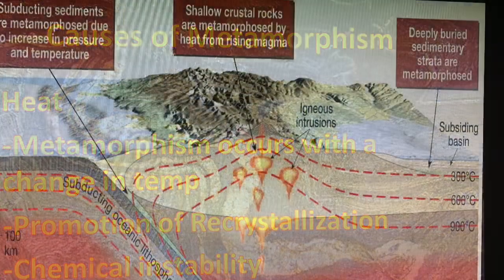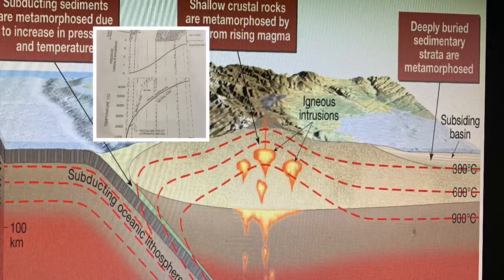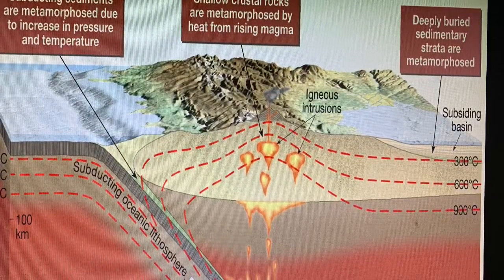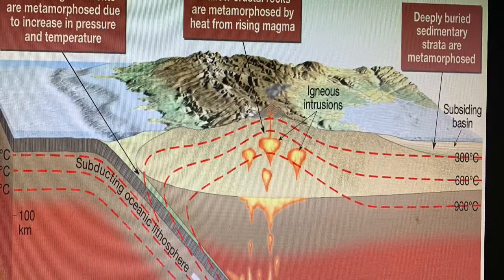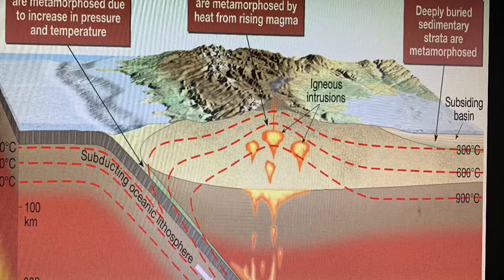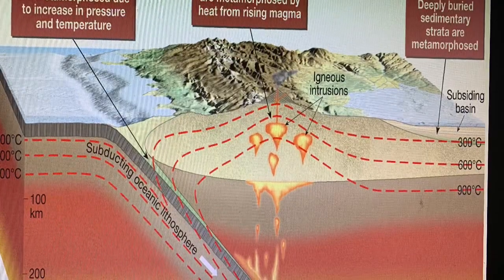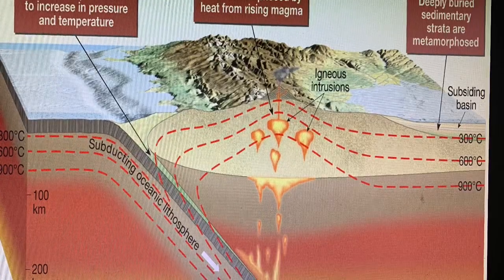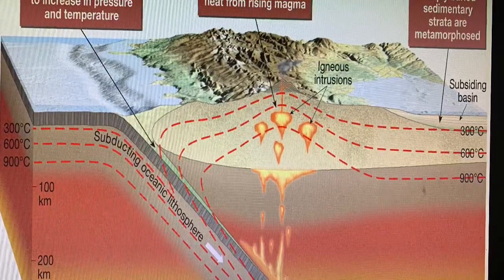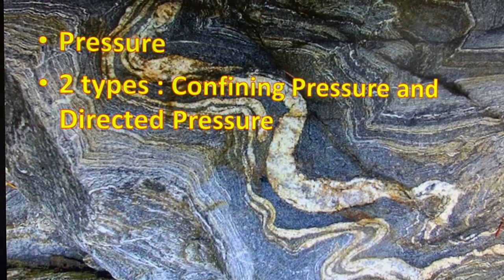Heat can be applied in various ways. The deeper you go inside the Earth, the hotter it gets. If rocks on a plate get subducted — pushed underneath another plate — they get hotter and hotter. Magma intrusions also heat the surrounding rocks, causing metamorphism. Even burying sediments deeper and deeper can generate enough heat that sedimentary rocks actually start to change into something else.